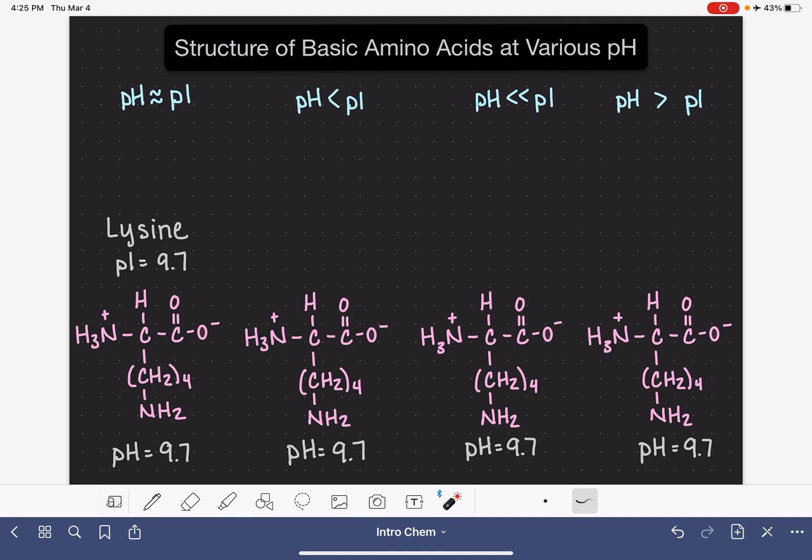For this, I'm going to be using the amino acid lysine as an example. Lysine has a pI value of 9.7, and here is the structure of lysine when it is in a pH environment of 9.7. When the pH of any amino acid, including lysine, is roughly equal to the pI, in that environment, the acid group is going to be existing with a negative charge, COO-, and the amino group is going to be existing with a positive charge, NH3+, just like we see in this representation right here.